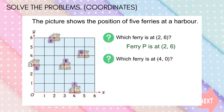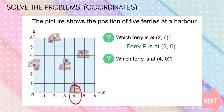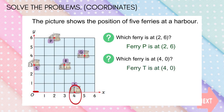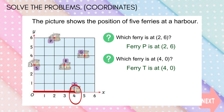Now, what ferry is at (4, 0)? Look at the X axis and find 4. Y is equal to 0, which means the ferry lies on the X axis. Ferry T is at (4, 0).